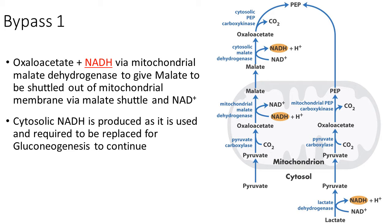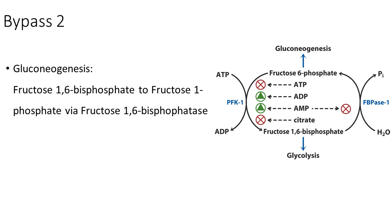Cytosolic NADH is consumed and needs to be replaced for gluconeogenesis to continue. Bypass 2 of gluconeogenesis is the conversion of fructose-1,6-bisphosphate to fructose-6-phosphate via fructose-1,6-bisphosphatase, which is the reverse of glycolysis step 3 — in essence, reversing the action of phosphofructokinase 1.